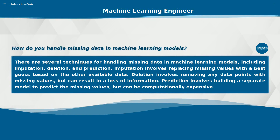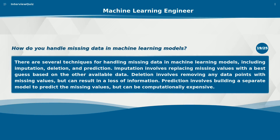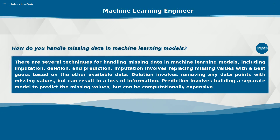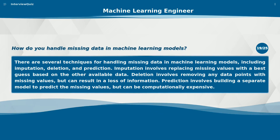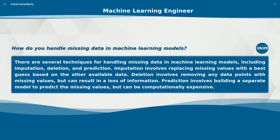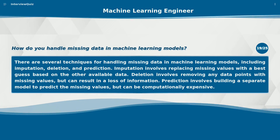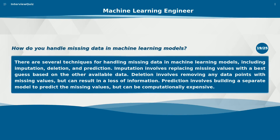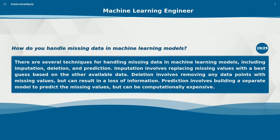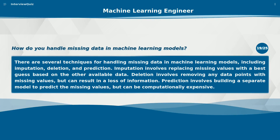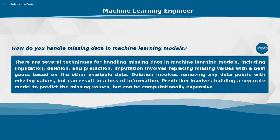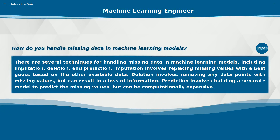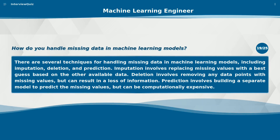How do you handle missing data in machine learning models? There are several techniques for handling missing data in machine learning models, including imputation, deletion, and prediction. Imputation involves replacing missing values with a best guess based on the other available data. Deletion involves removing any data points with missing values, but can result in a loss of information. Prediction involves building a separate model to predict the missing values, but can be computationally expensive.